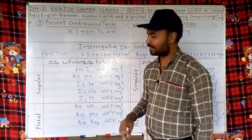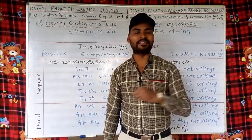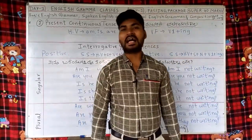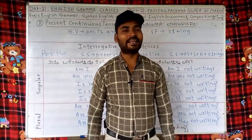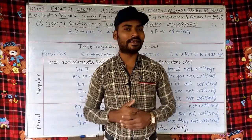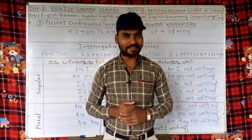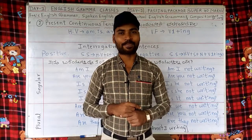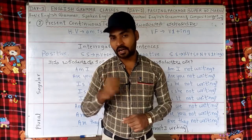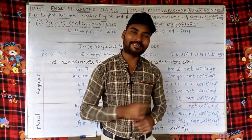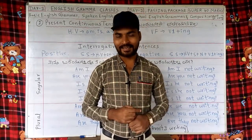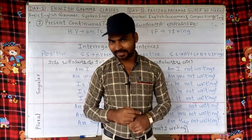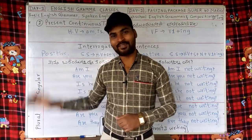Now let's take the example of the verb 'run'. Am I running? — Naanu Oduttiddheya? Are you running? — Neenu Oduttiddhya? Is he running? — Avanu Oduttiddhaneya? Is she running? — Avalu Oduttiddhaleya? Is it running? — Adu Oduttiddheyeya? Are we running? — Naamu Oduttiddheveyeya? Are you running? — Neevu Oduttiddhera? Are they running? — Avaru Oduttiddhaleya?